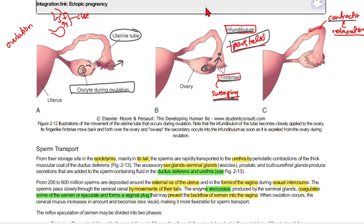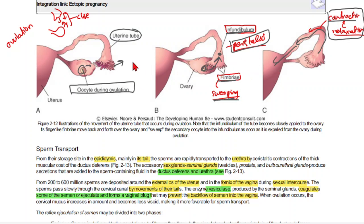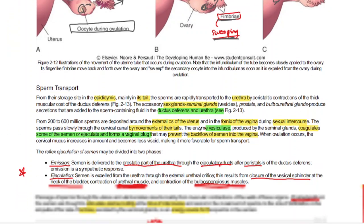In the infundibulum, peristalsis occurs — contraction and relaxation — and due to this the oocyte moves through this area toward the uterus. By this sweeping peristalsis movement, it moves toward the uterus, and at the ampulla fertilization takes place.